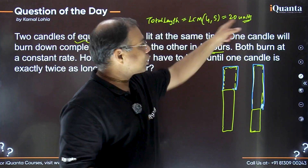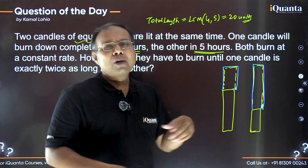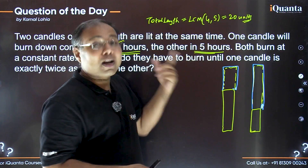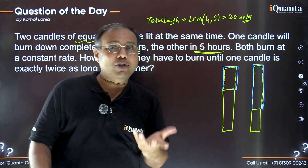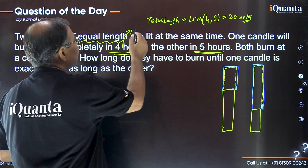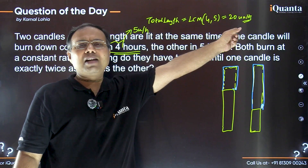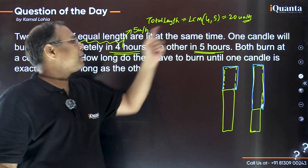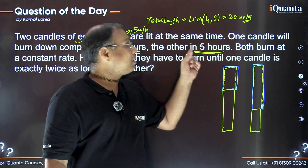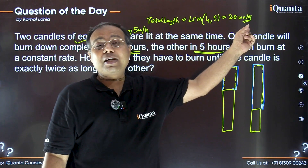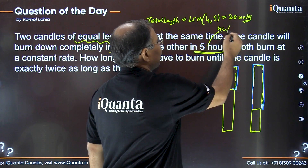The total length — that is, total work — is 20 units. We have two candles: one burns completely in four hours, the other in five hours. We can find the rate of burning for each. The first candle burns at 20 ÷ 4 = 5 units per hour. The second candle burns the entire 20 units in five hours, so it burns at 20 ÷ 5 = 4 units per hour.